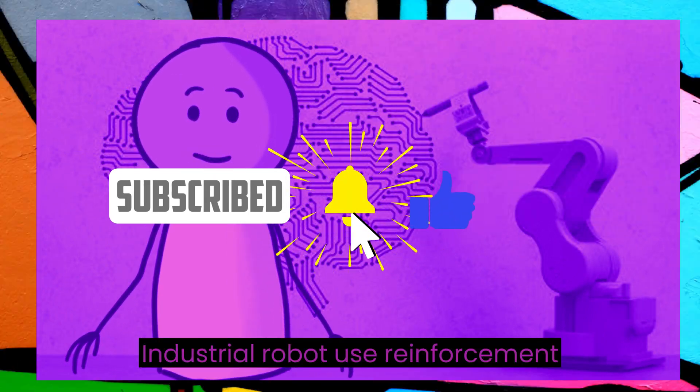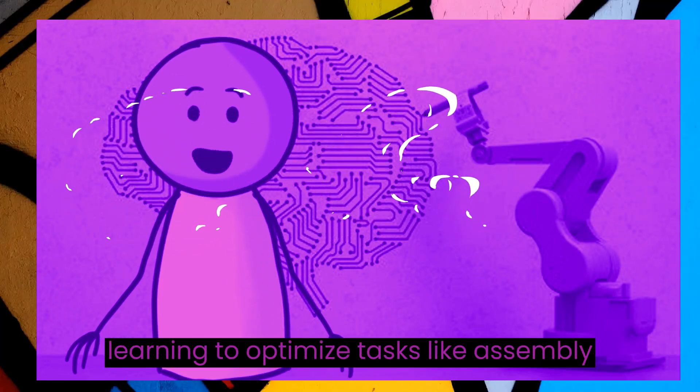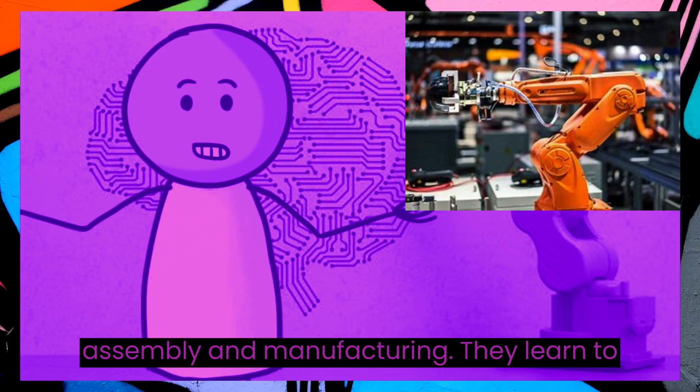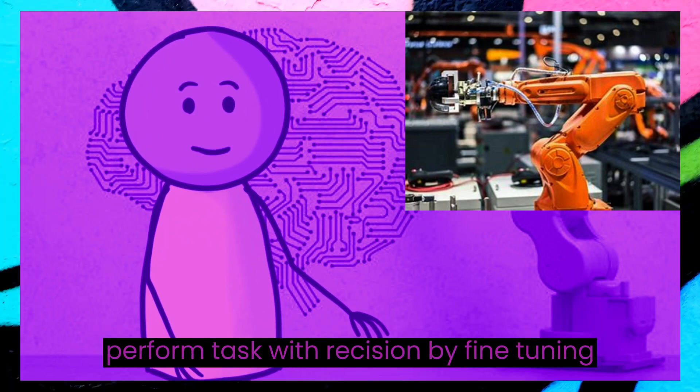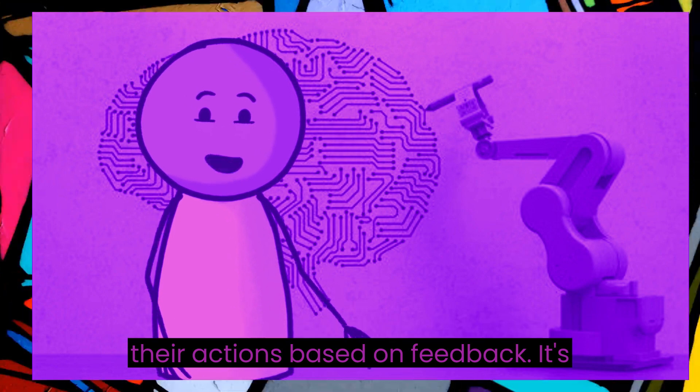Industrial robots use reinforcement learning to optimize tasks like assembly and manufacturing. They learn to perform tasks with precision by fine-tuning their actions based on feedback. It's like having a digital workforce that constantly improves.